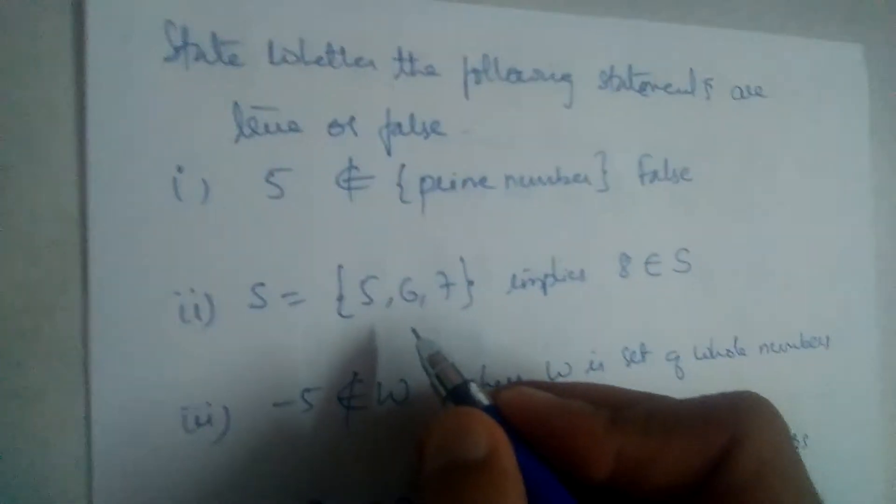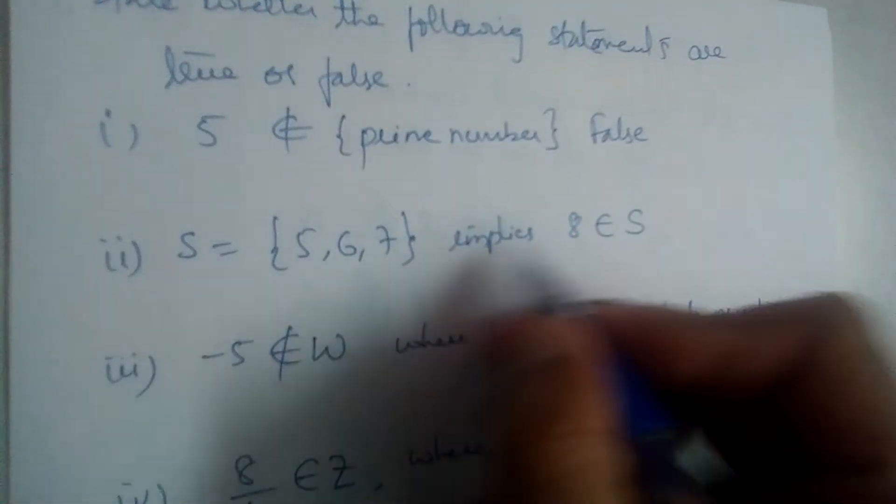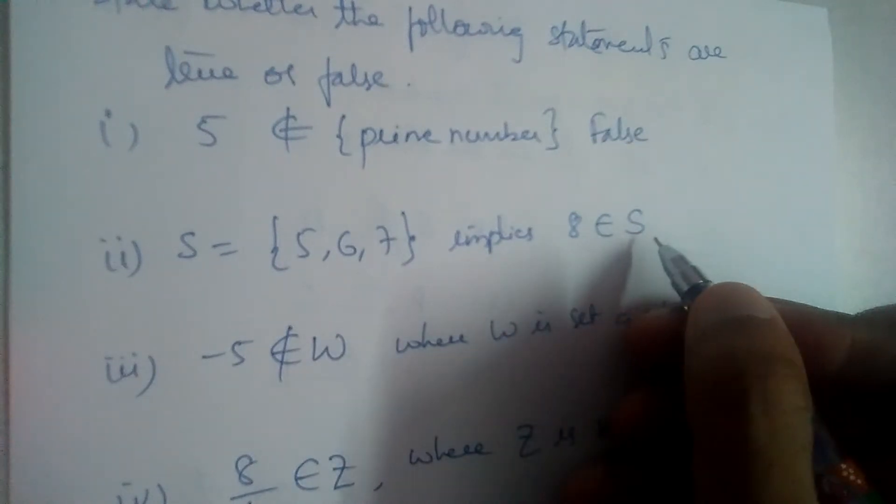So here the statement is 5 does not belong to prime number, which is false, right? So answer for the first one is false. Second one: S equals {5, 6, 7} implies 8 belongs to S.